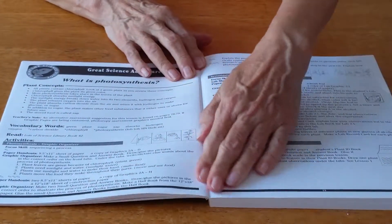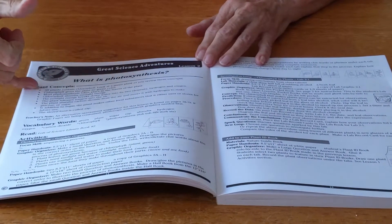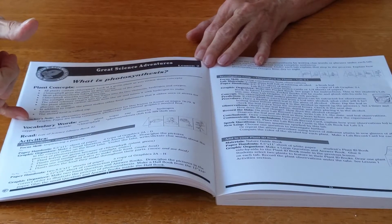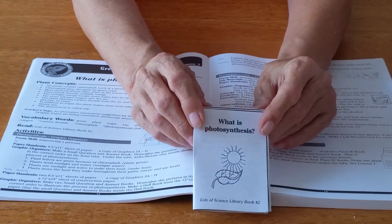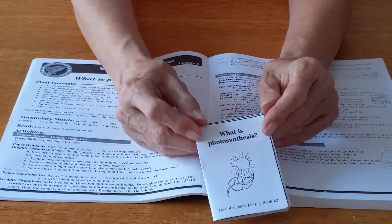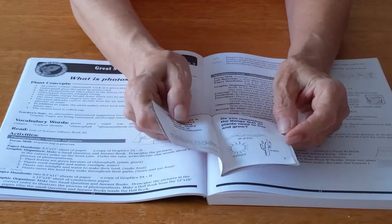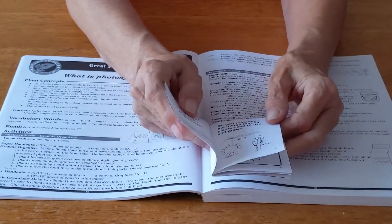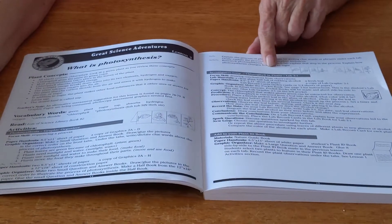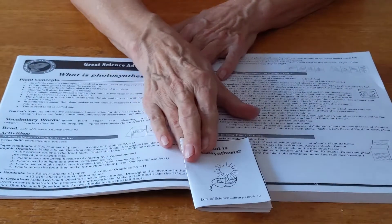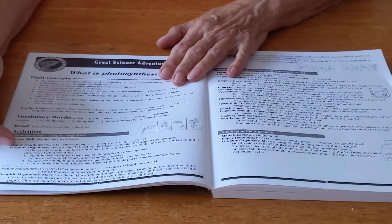When we turn to the next lesson, lesson two, I wanted to show you this one. It's the same idea. The concepts are here, a note to the teacher, vocabulary words, and all of our information is in the Lots of Science library book. This is basically in lieu of a textbook. This is going to explain to the students what they need to understand. We use graphics to indicate what's going on and then those same graphics are used in the organizers that they make.